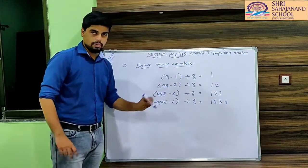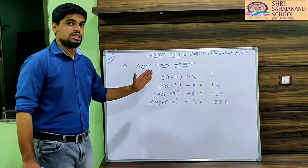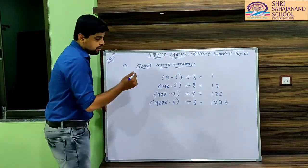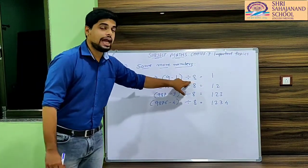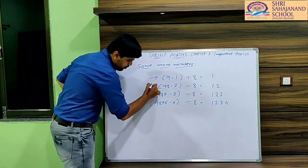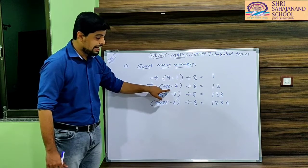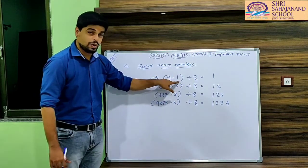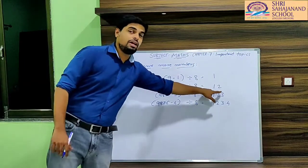The next topic is Some More Numbers, in which they have given us this pattern. If we look at this pattern carefully, we will find a trick in it. In step 1, they have given us (9 − 1) ÷ 8, which gives us 1. In step 2, they have taken 98. Since 9 minus 1 is 8, they have taken 98 minus 2, where the subtractor increased by 1. So (98 − 2) ÷ 8 gives us 12.